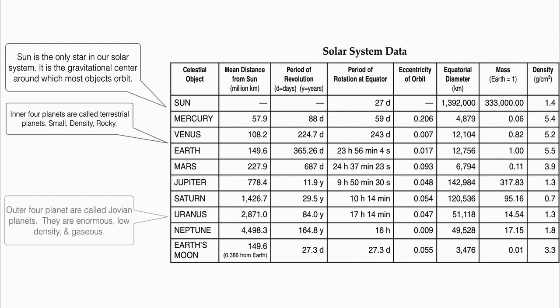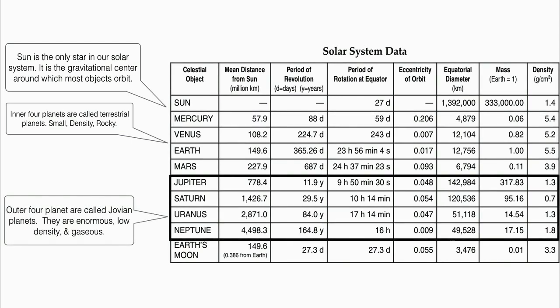Next, we have our Jovian planets. Our Jovian planets are gaseous planets, and they are all very large. Their sizes are much larger than the terrestrial planets. They also have very low densities. One of the famous questions I've seen on Regents — very ridiculous — is about Saturn and its low density.